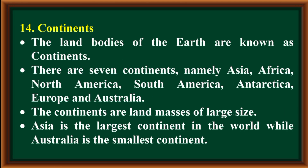Continents: the land bodies of the earth are known as continents. There are seven continents namely Asia, Africa, North America, South America, Antarctica, Europe, and Australia. The continents are large land masses. Asia is the largest continent in the world, while Australia is the smallest continent.